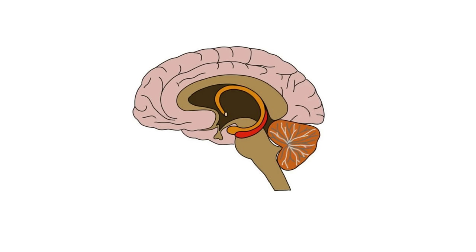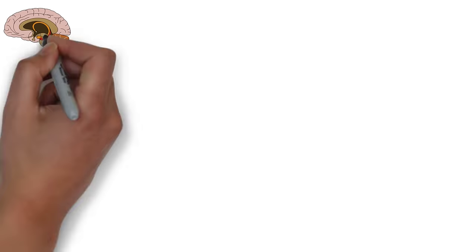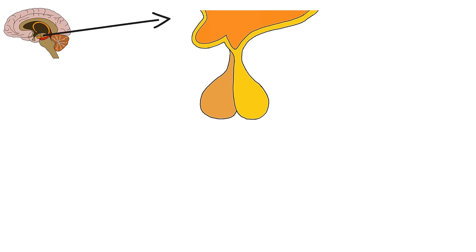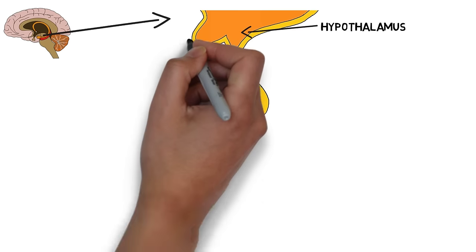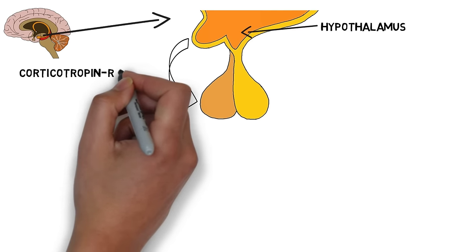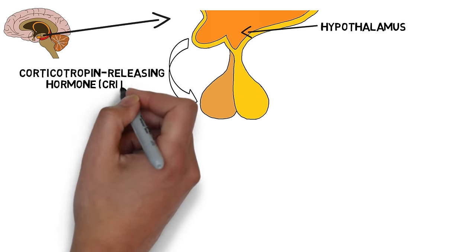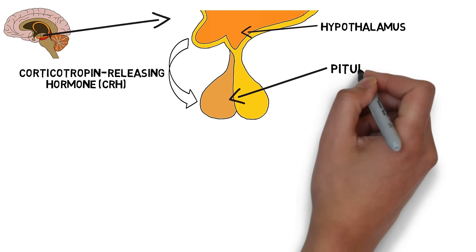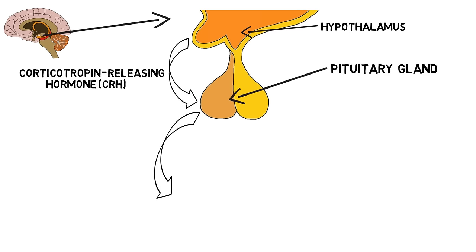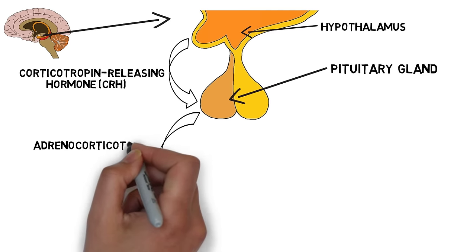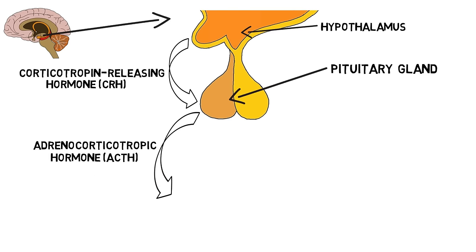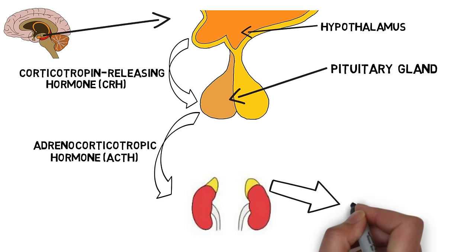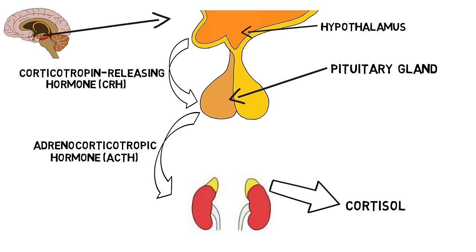The primary function of the HPA axis is to regulate the stress response. When we experience something stressful, the hypothalamus releases a hormone called corticotropin releasing hormone, or CRH. CRH signals the pituitary gland to secrete a hormone called adrenocorticotropic hormone, or ACTH, into the bloodstream. ACTH travels down to the adrenal glands, where it prompts the release of a hormone called cortisol from the cortex, or outer layer of the adrenal glands.